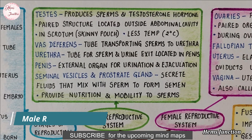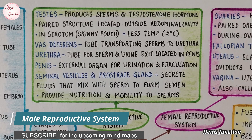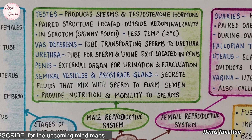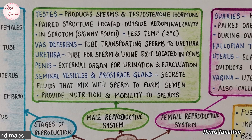The male reproductive system produces the germ cells and delivers them to the site of fertilization. It consists of different parts: testes, vas deferens, urethra, penis, seminal vesicles, and prostate gland.